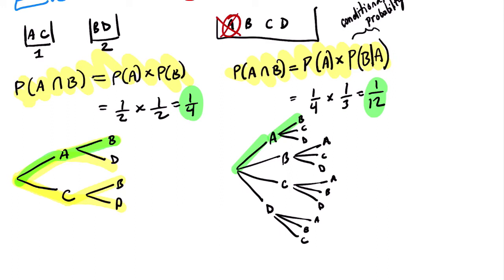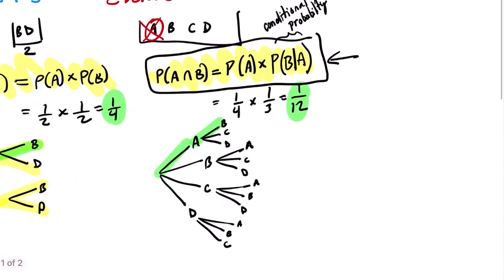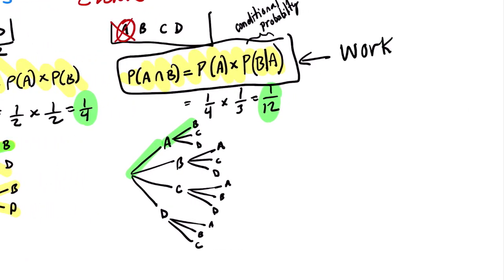The general definition — P(A and B) = P(A) × P(B|A) — works for dependent events, but it works for all events. So it works for independent events too. In other words, it always works.